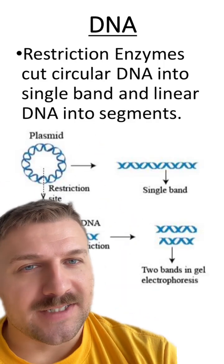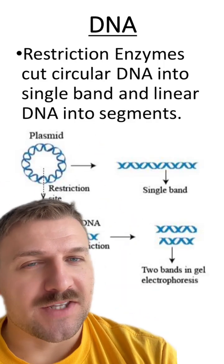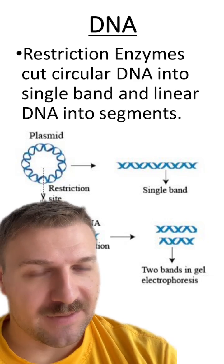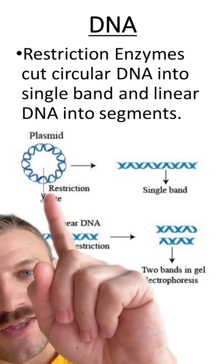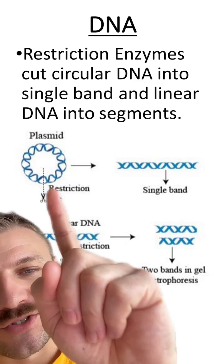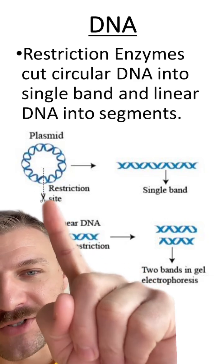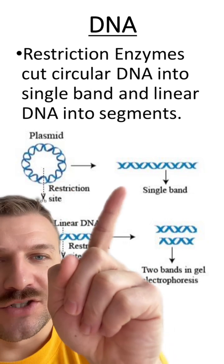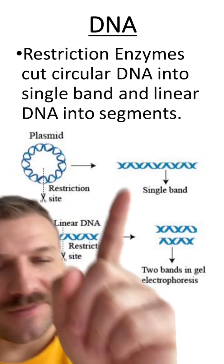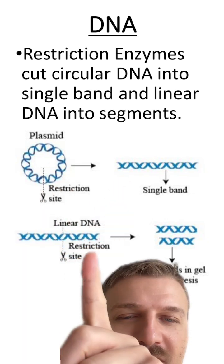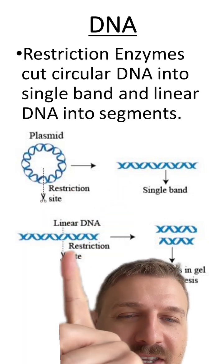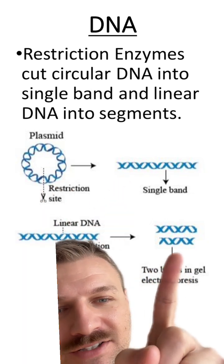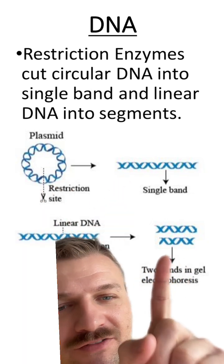One last thing to point out about DNA is how restriction enzymes are going to cut the DNA differently. You can see with a plasmid or circular DNA, a restriction enzyme is going to make this circle into one segment. However, with linear DNA, you can see this long strand being cut into two smaller fragments.